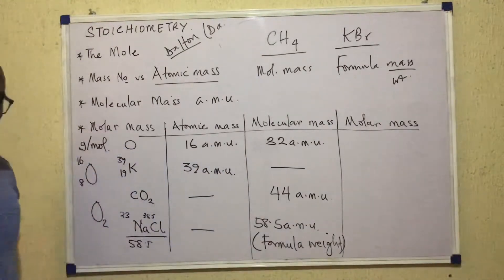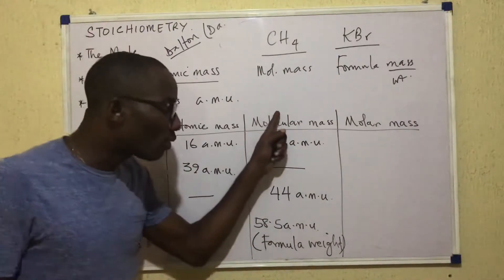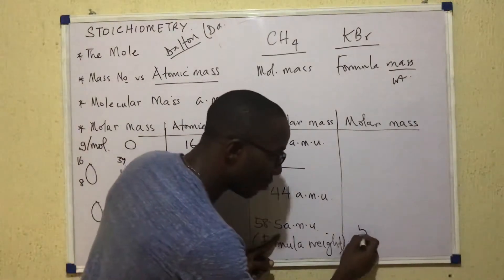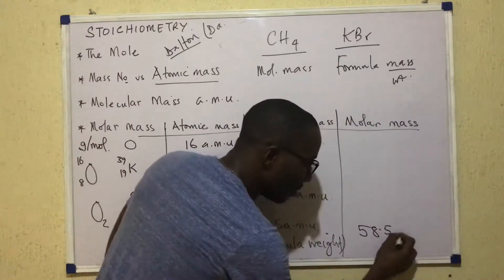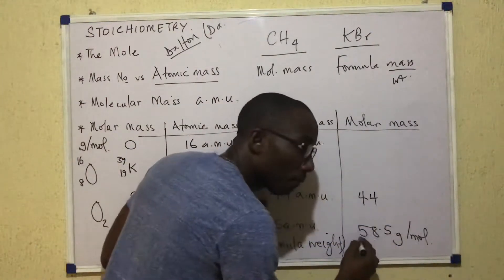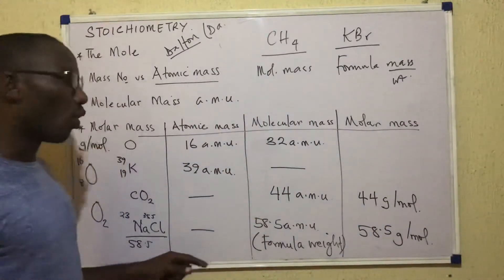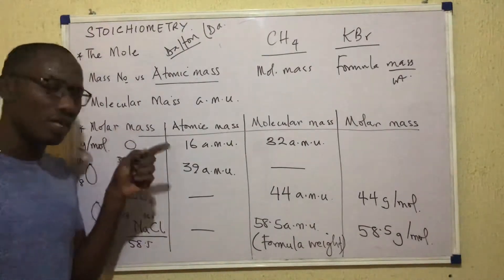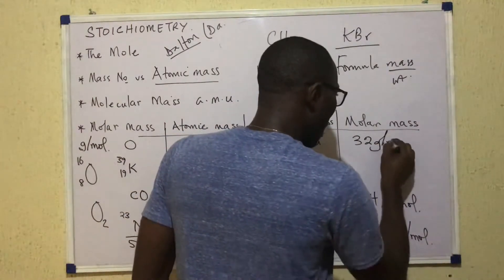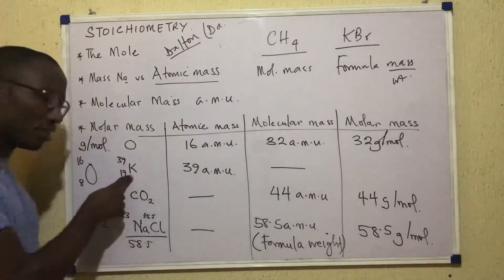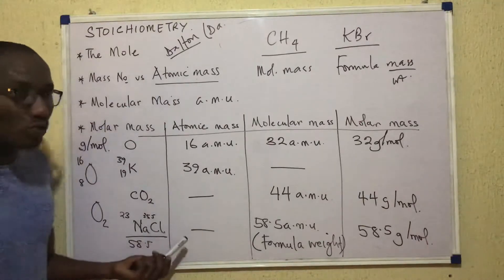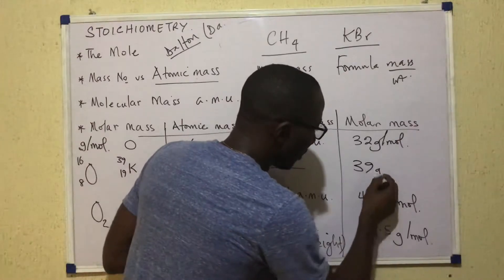To get molar mass, you use the molecular mass or formula weight. For NaCl, which doesn't have molecular mass, I take its formula weight of 58.5 but give it the unit gram per mole. For CO₂, it has a molecular mass of 44, so I write 44 grams per mole. For oxygen, which has a molecular mass of 32, the molar mass is 32 grams per mole. For potassium, which doesn't form molecules and has only atomic mass, its molar mass will be 39 grams per mole.